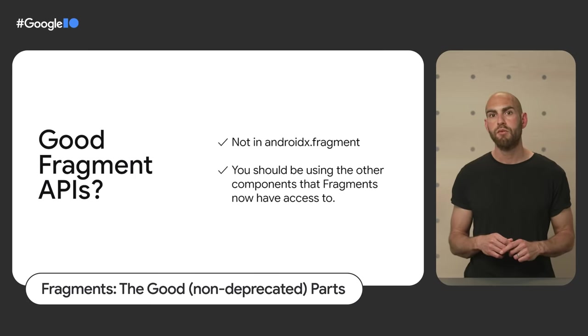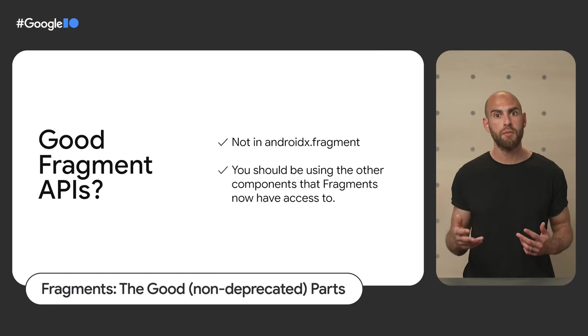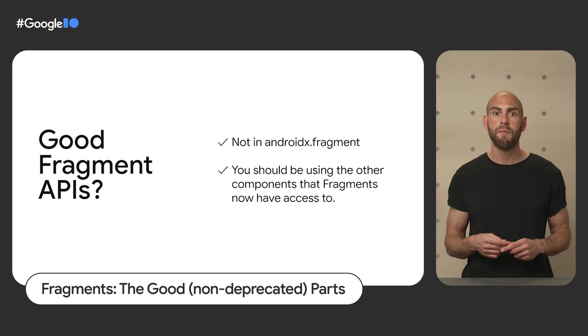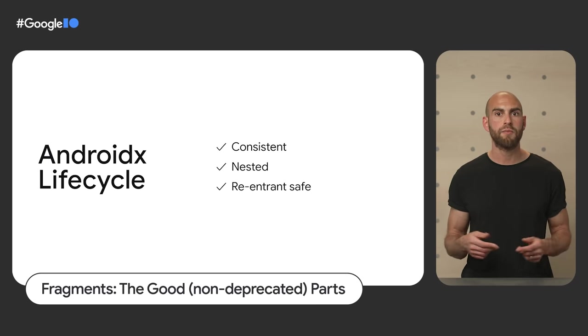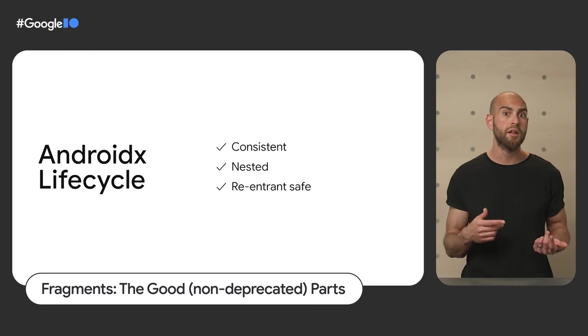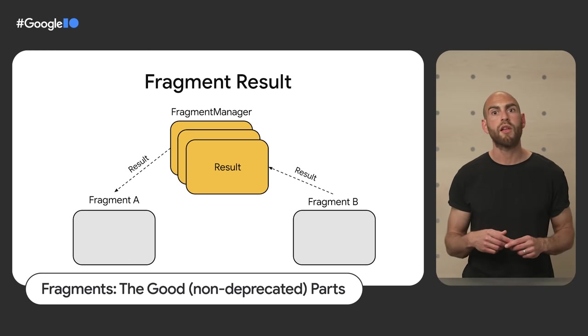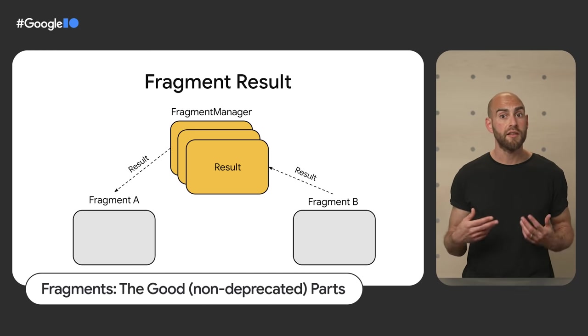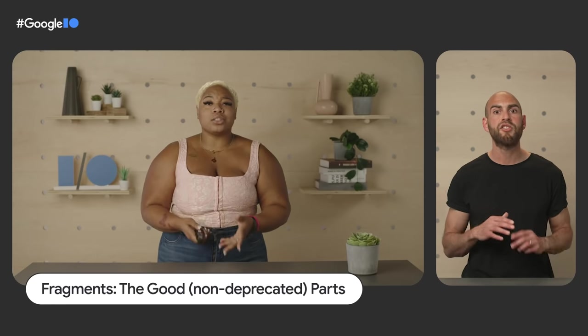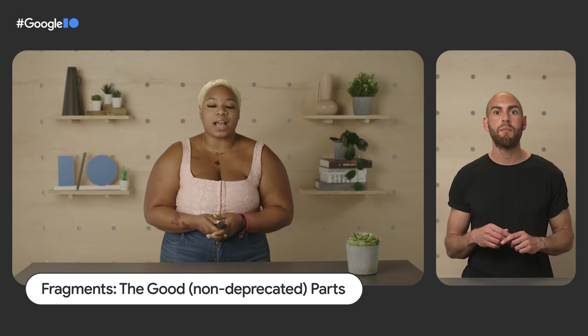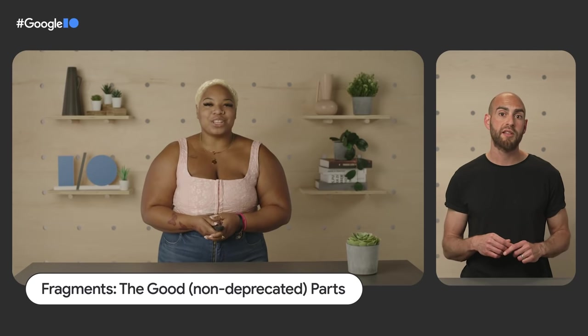One of the first ever support libraries was Fragments. Love them or hate them, fragments today have changed significantly. Responsibilities that first belonged to fragments are now handled by separate purpose-built classes, and APIs have been deprecated in favor of separate testable classes. For example, APIs that look like lifecycle methods have been deprecated in favor of AndroidX lifecycle. To pass information from one fragment to another, use the FragmentResult API, which under the hood uses lifecycle APIs. This leads to code that's easier to test using FragmentScenario and TestLifecycleOwner. Check out 'Fragments: the good non-deprecated parts' to find out more.